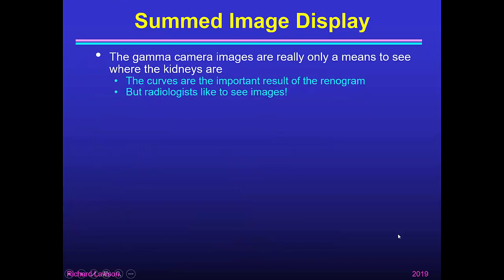The gamma camera images are really only a means to see where the kidneys are. We use them to draw regions of interest, and from that we generate activity time curves. But it's the curves that are the important result of the renogram, so it's important to display those correctly. Nevertheless, radiologists like to see images, and so it's usual to include some sort of images within the renogram results display.